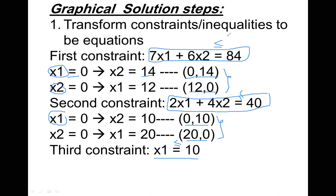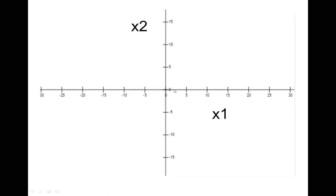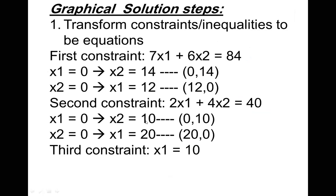Step two: we plot the equations. We have two decision variables, x1 and x2, so we use an x-axis and a y-axis. From the calculated points, the maximum value for x1 is 20 and for x2 it is 14. We set up a scale — for example, x1 axis up to 30 and x2 axis up to 15 — to include all the values. Then we plot all constraints on this graph and highlight accordingly.